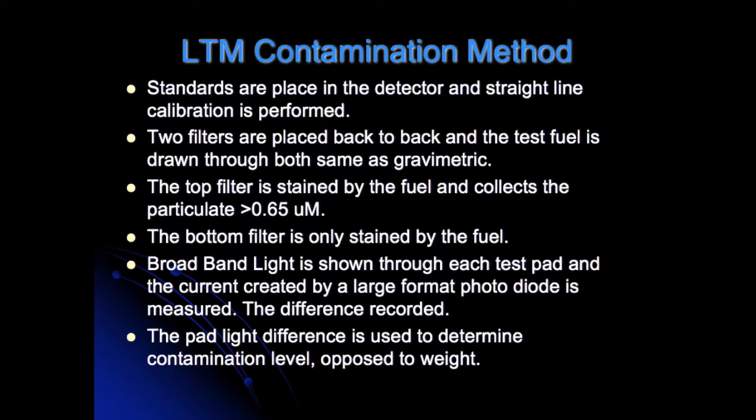D2 Inc. utilizes the light transmission method, LTM, for determining the contamination of fuels. Standards are placed in the detector and a straight line calibration is performed. Two filters are placed back to back and the test fuel is drawn through both, the same as the gravimetric process. The top filter is stained by the fuel and collects particulate greater than 0.65 micrometers. The bottom filter is only stained by the fuel. Broadband light is shown through each test pad and the current created by a large format photo diode is measured. The difference is recorded.